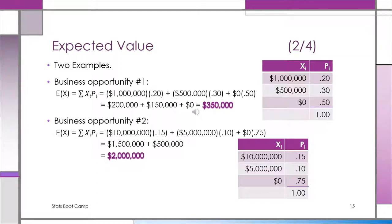Business opportunity two, where there's a 15% chance of making 10 million, a 10% chance of making 5 million, and a 75% chance of making zero, the expected value turns out to be $2 million.